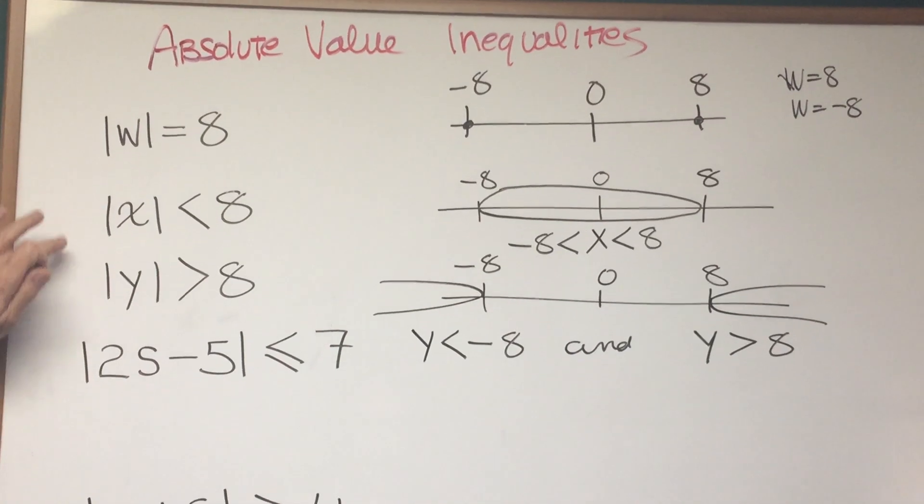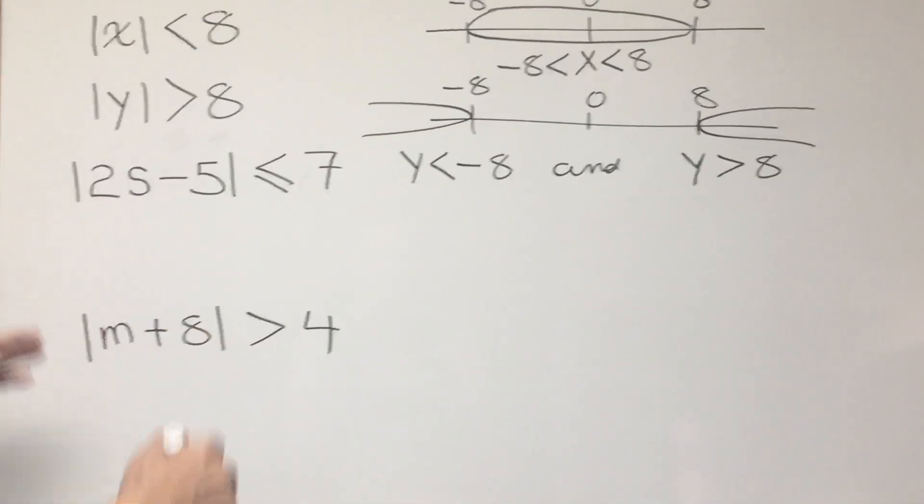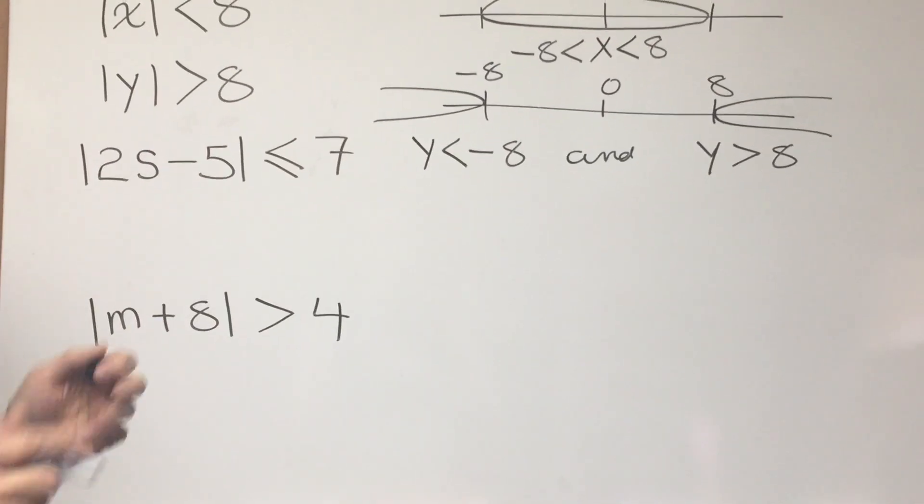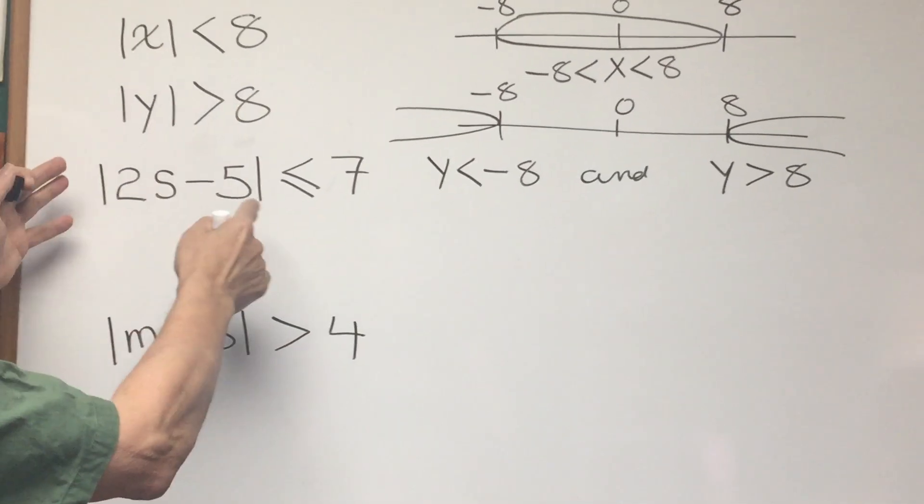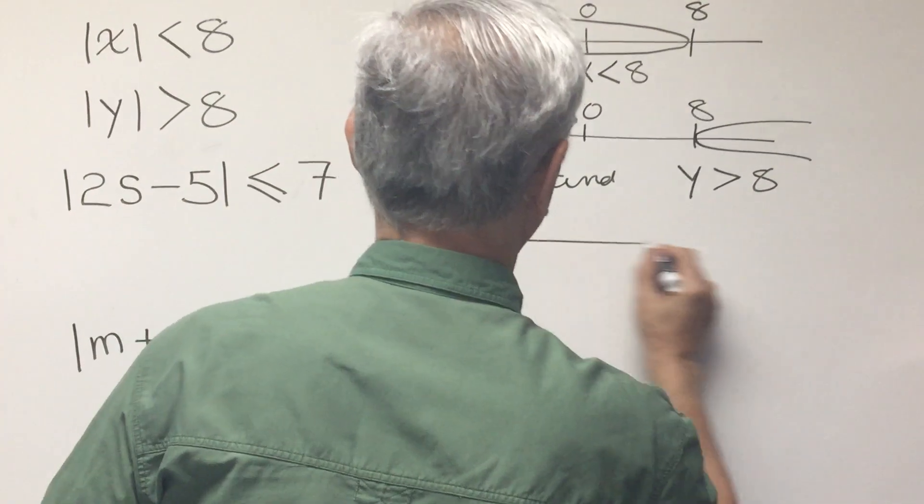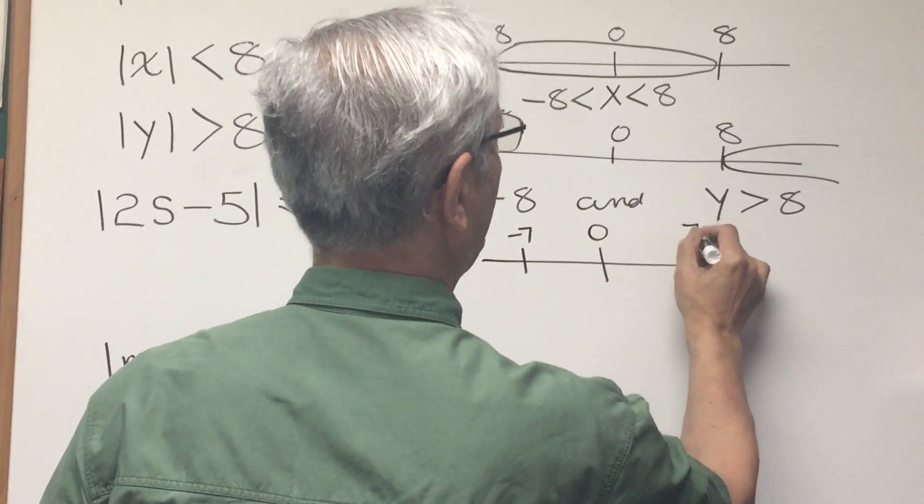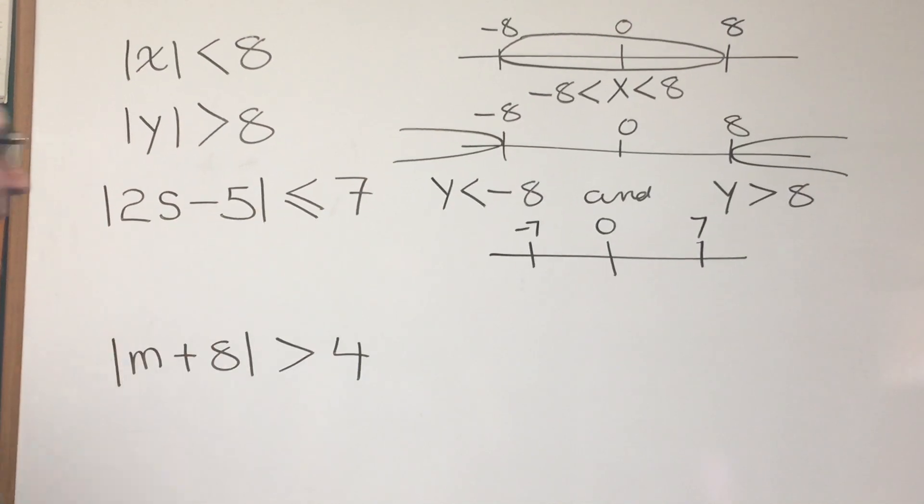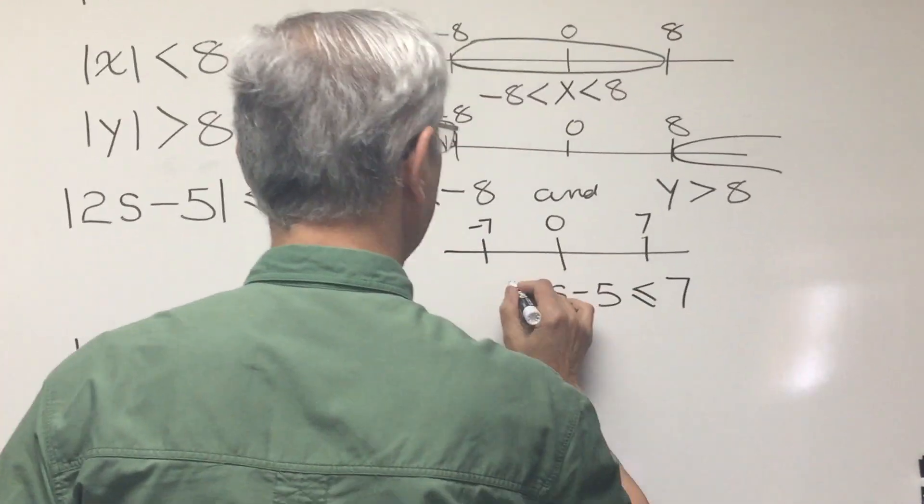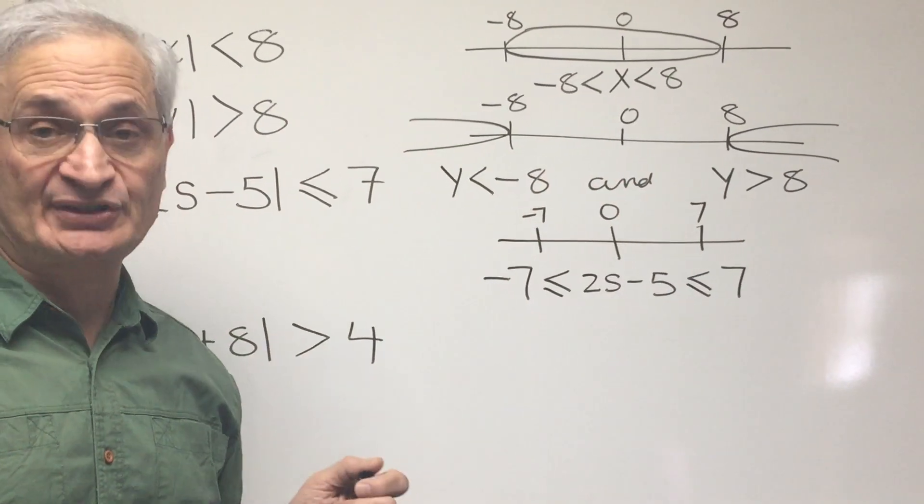Let's use the examples of these simpler problems to go to the kind of problems that would appear on the DAT, the more complicated type of problems. This problem says, the absolute value of 2s minus 5 is less than or equal to 7. Well, what does that mean? It says the distance of this expression from 0 is less than or equal to 7. Let's draw a little diagram here. Here's my negative 7, here's my 0, here's my 7, and now the expression 2s minus 5 is going to fall within that range, between negative 7 and positive 7.